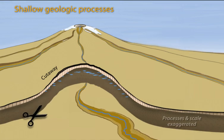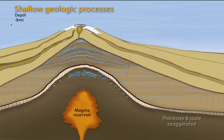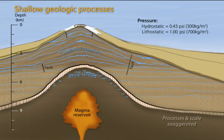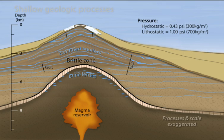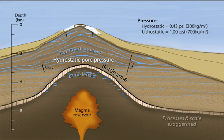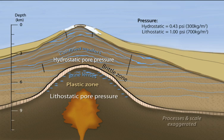To reorient you, we again cut away the volcano surface to reveal a more detailed view. The crust is separated into an upper brittle seismogenic zone under hydrostatic pressure that has a complex system of fractures and aquifers, and a lower aseismic plastic zone that is subject to lithostatic pore fluid pressure and which shallows dramatically under volcanoes.